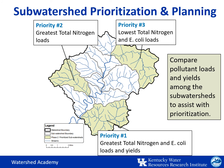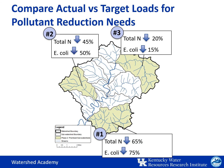Second priority is the western subwatershed that has the greatest total nitrogen loads, and finally, the lowest priority — priority three — is the subwatershed that has the lowest loads of both total nitrogen and E. coli. By comparing the actual loads to the target loads, we can see how much pollutant reduction is needed to meet water quality standards. In our example watershed, the first priority subwatershed needs a 65% reduction of total nitrogen and 75% of E. coli to meet the standards, whereas the second priority only needs to reduce total nitrogen by 45% and E. coli by 50%.